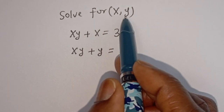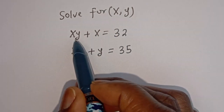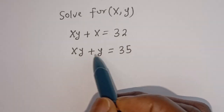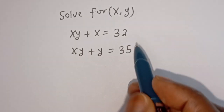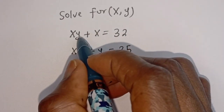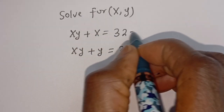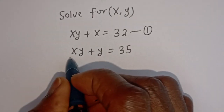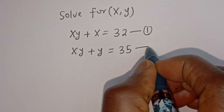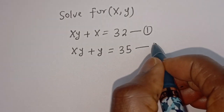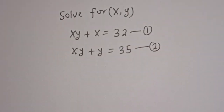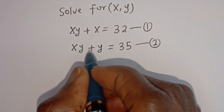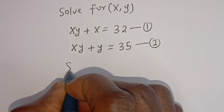Hello. How to solve for x and y in this equation: x y plus x is equal to 32, and x y plus y is equal to 35. Let's call the first one equation 1 and the second one equation 2. Now let's subtract equation 1 from equation 2.